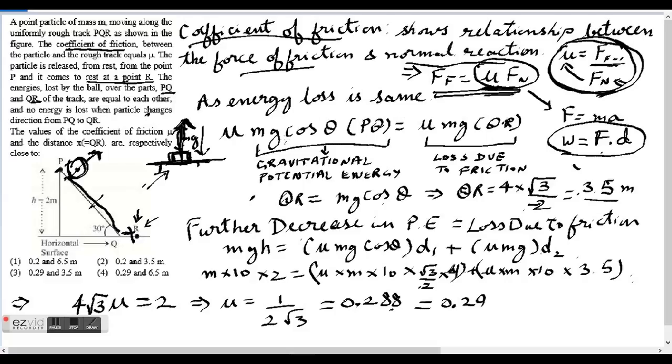So what is the energy loss due to friction? We have seen that force of friction is equal to mu times FN. So we'll use this mu times FN.